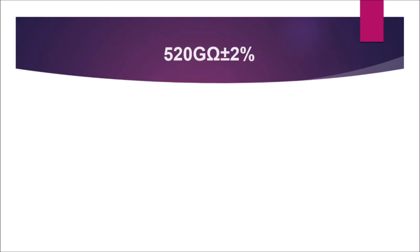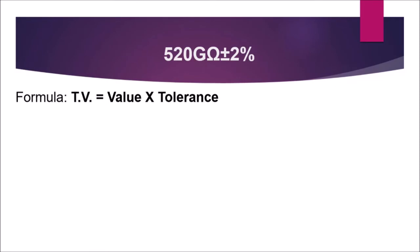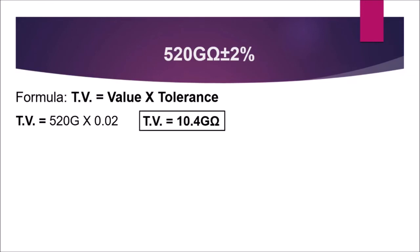Next, we have 520 giga-ohms ±2%. 2% is equal to 0.02. We compute the tolerance value: value times the tolerance. The value is 520G (giga), multiplied by 0.02, giving us a tolerance value of 10.4 giga-ohms.